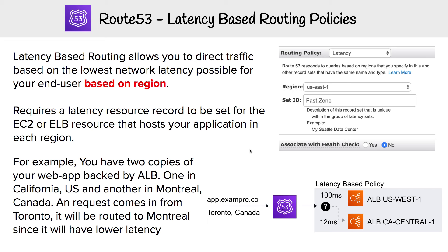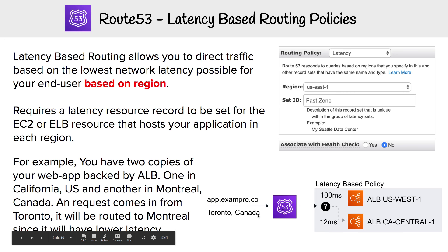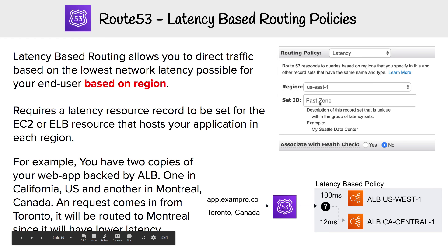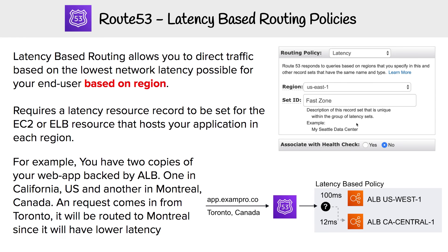So the idea is, let's say people want to hit app.exampro.co and they're coming from Toronto. We've created two records with latency for this subdomain: one is set to US West, which is on the West Coast, and then we have one for Central Canada, which is located in Montreal.